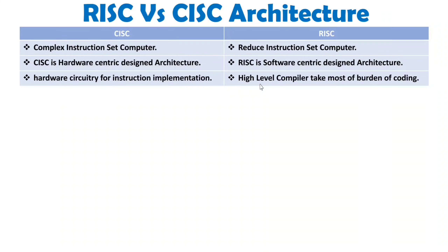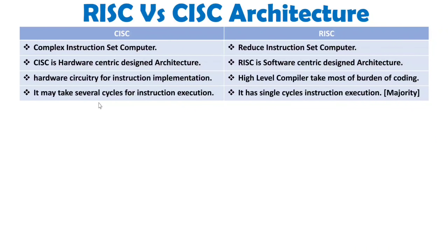High-level compiler means we do programming using high-level languages like C and C++, and by using a compiler we convert the given program into machine code, which is then given to the microprocessor or microcontroller. Most of the burden is on the compiler. When you execute instructions, CISC architecture takes several cycles, while with RISC, the majority of instructions execute in a single cycle. There are a few instructions with multiple cycles, but the majority have single cycles only.